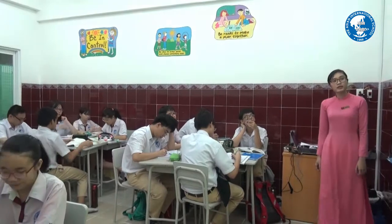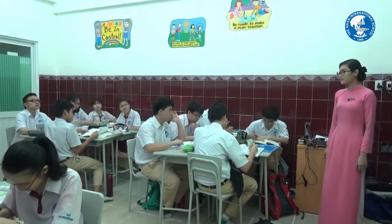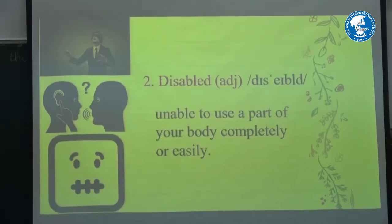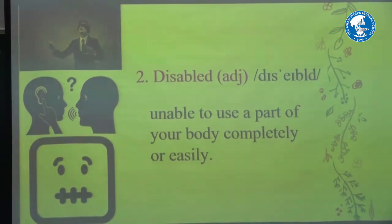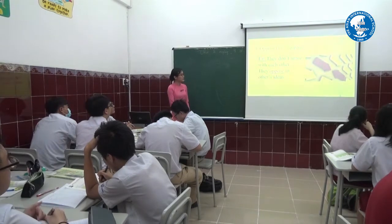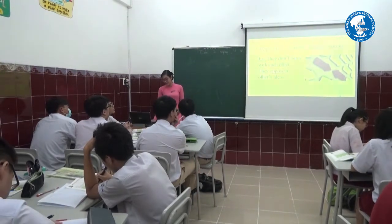The first word: mentally retarded. It is an adjective meaning less mentally developed than normal. The second word — what happened to him? He is blind. What happened to her? She is deaf — she can't hear. And what happened to her? She is mute. These people are unable to use a part of their body properly, so we call them disabled. Disabled means unable to use a part of the body completely or easily. The next word: oppose. They don't agree with each other — that means they oppose each other's ideas. Oppose means disagree strongly.